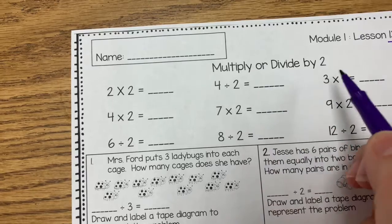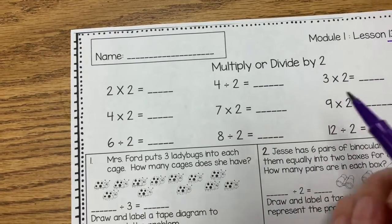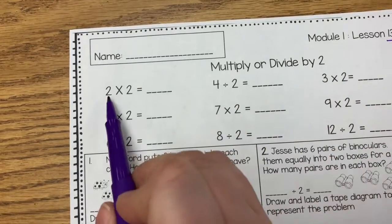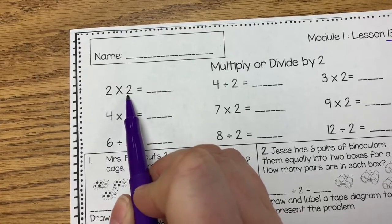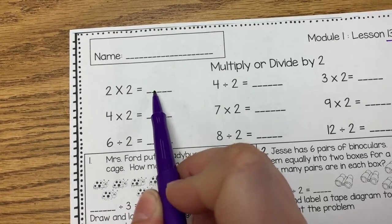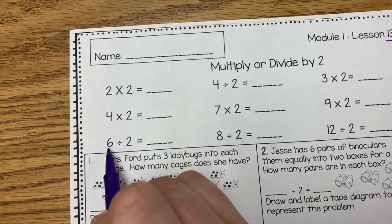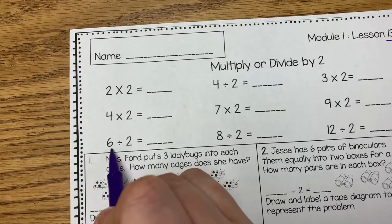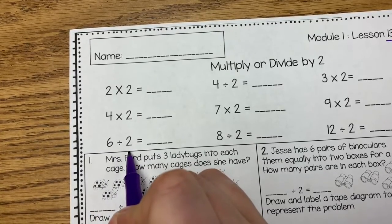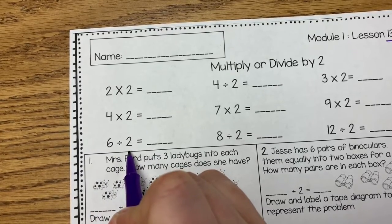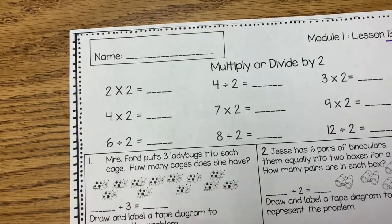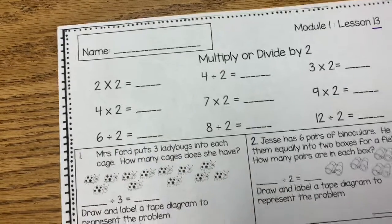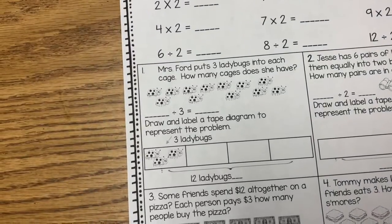This is multiplying and dividing by two. Remember, multiplication and division go together. So if you know that two times two is two groups of two, or two plus two, that would equal four. So when you look at division, this is your total amount. How many groups of two would you have if you divided that six into two, or two times what would give you that six? That's one way to think about multiplication and division and how they go together.